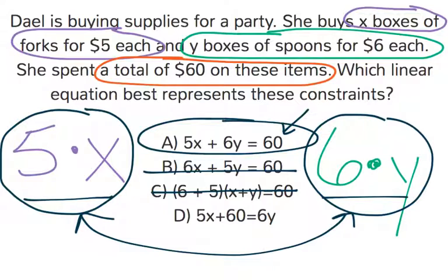And then D, it does have 5X, right? And it also has the 6Y, but everything's kind of out of place. 5X, that's the number of boxes of forks times 5, plus 60, which is the total, equals the number of boxes of spoons times 6. That doesn't really make sense. Everything got mixed up there. Our answer should just be A.